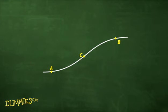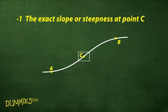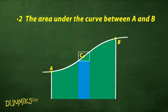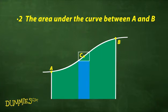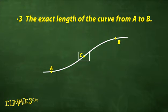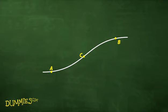This figure shows one curve and three things you might like to know about it: the exact slope or steepness at point C, the area under the curve between A and B, and the exact length of the curve from A to B. Regular math formulas for slope, area, and length work for straight lines and simple curves, but not for weird curves like this one.